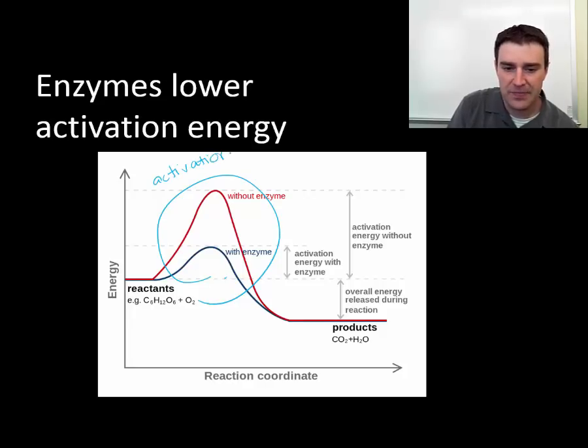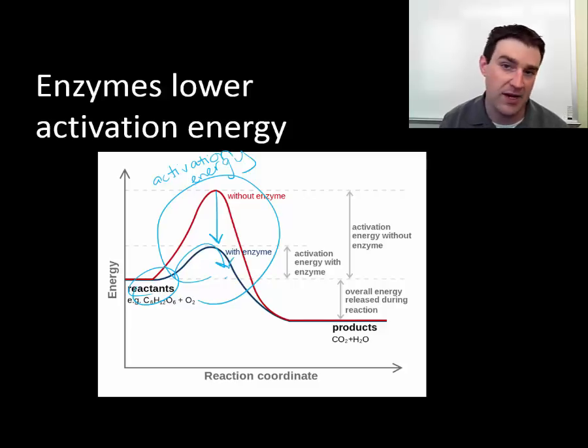And what enzymes do is they simply lower the hill. They're going to make it easier for chemical reactants to get over that hill. And so they have an easier time becoming products. And so by lowering the activation energy, they speed up the chemical reaction.